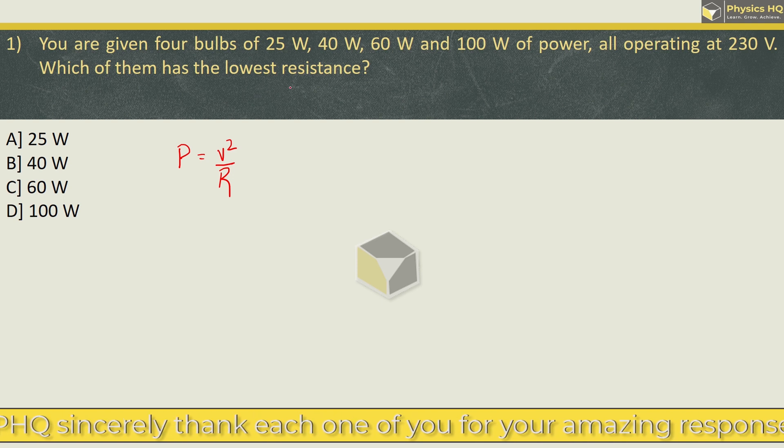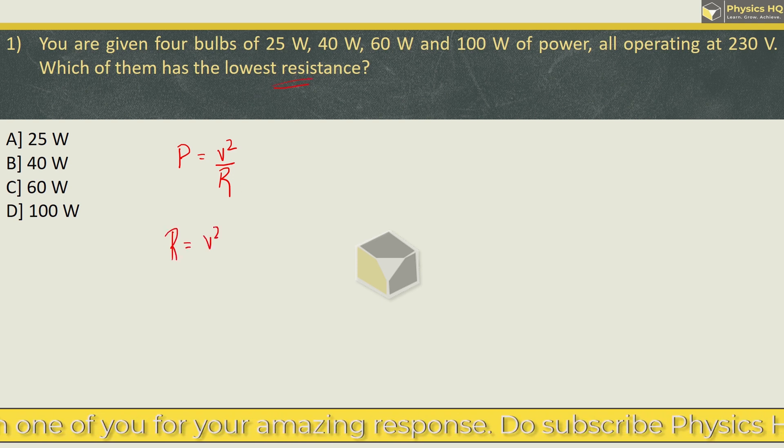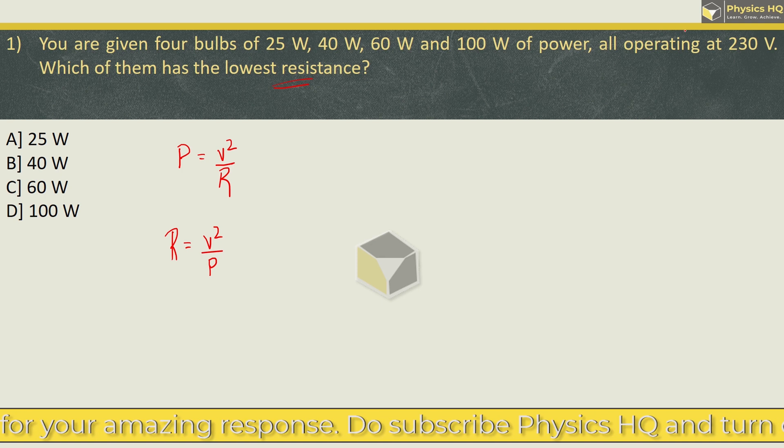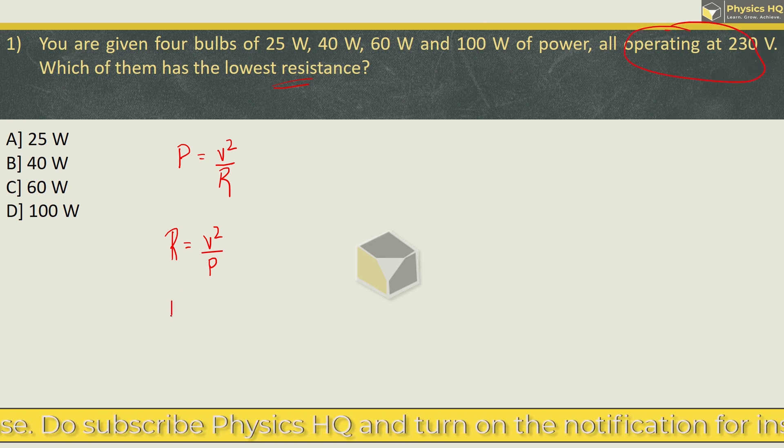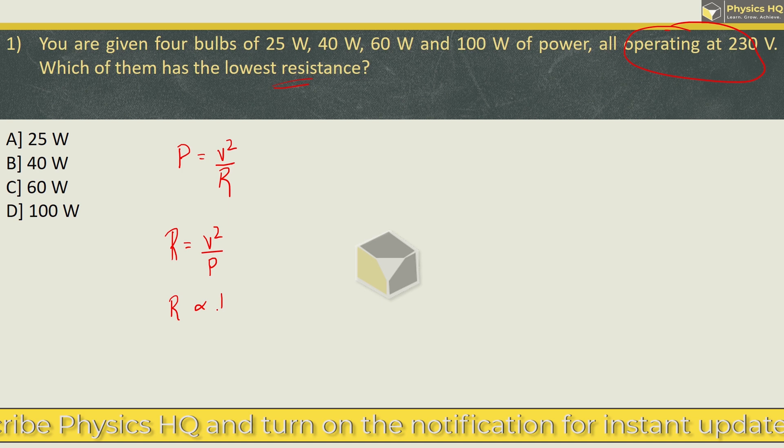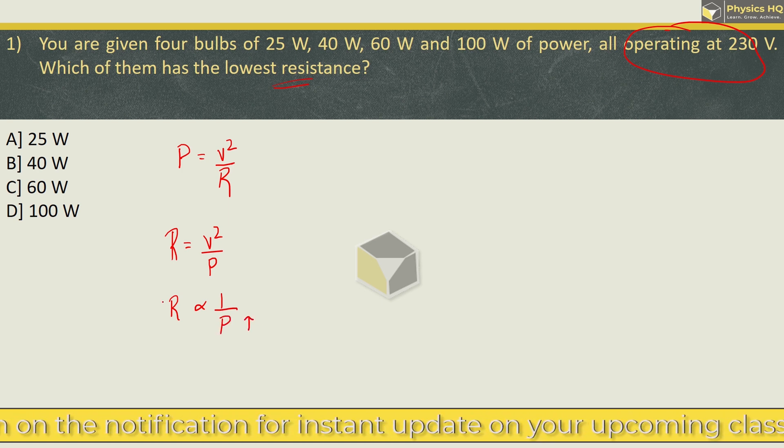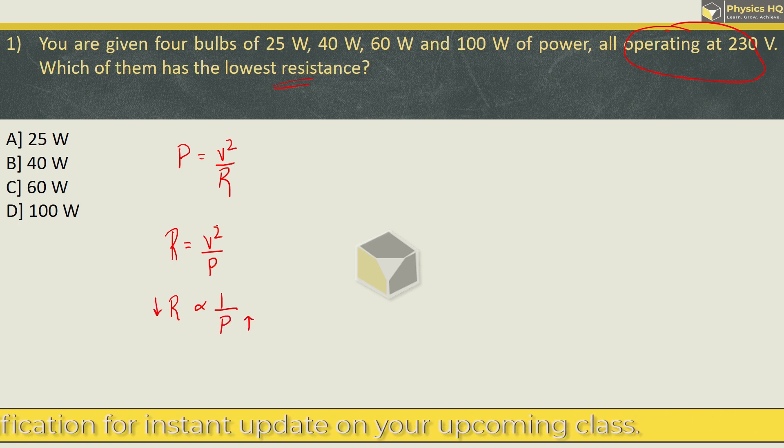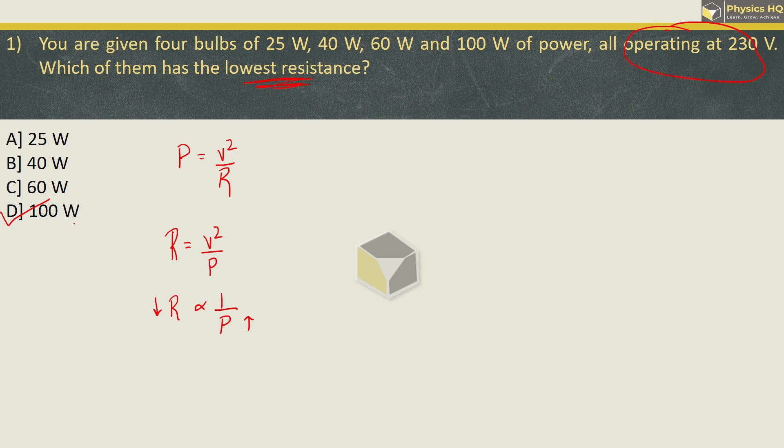Now here we are supposed to find out the resistance. So rearrange this. R is equal to V square by P. Now since they have said that everyone is operating at the same voltage, we can see that R is inversely proportional to power. Which power is highest, the resistance will be lowest. And that is what they have asked. So the correct option will be option D, 100W. Hope you understood this.